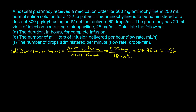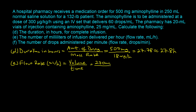For part E, we calculate the flow rate in milliliters per hour, which equals total volume divided by time. That is the 270 milliliters from part B divided by the 27.8 hours from part D, giving a flow rate of 9.71 milliliters per hour.